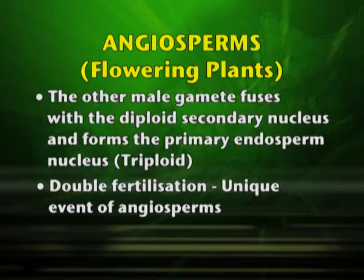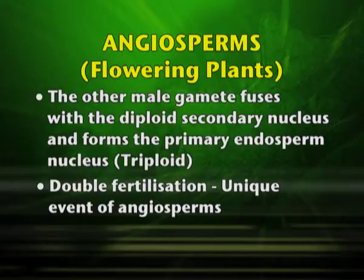The other male gamete fuses with the diploid secondary nucleus to form the primary endosperm nucleus, which is responsible for storing food. This is triploid and this process is known as triple fusion. Double fertilization is a unique event in angiosperms: the first fertilization is syngamy (fusion with the egg cell) and the second is triple fusion.